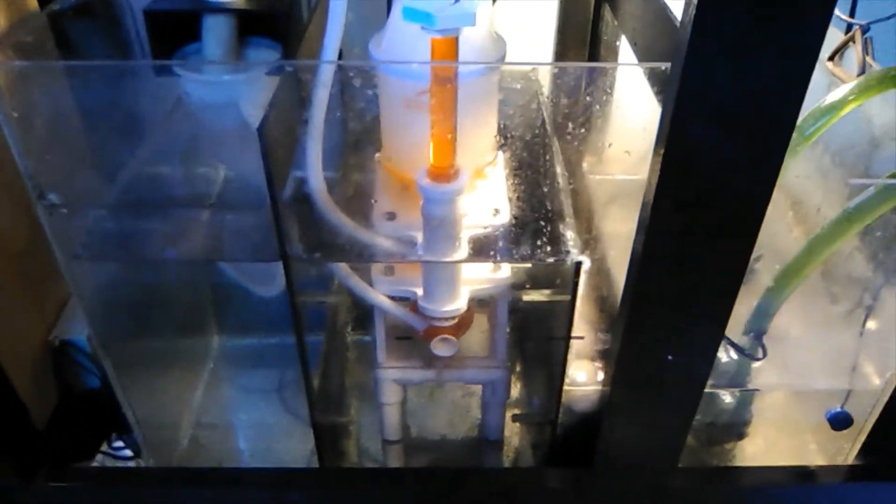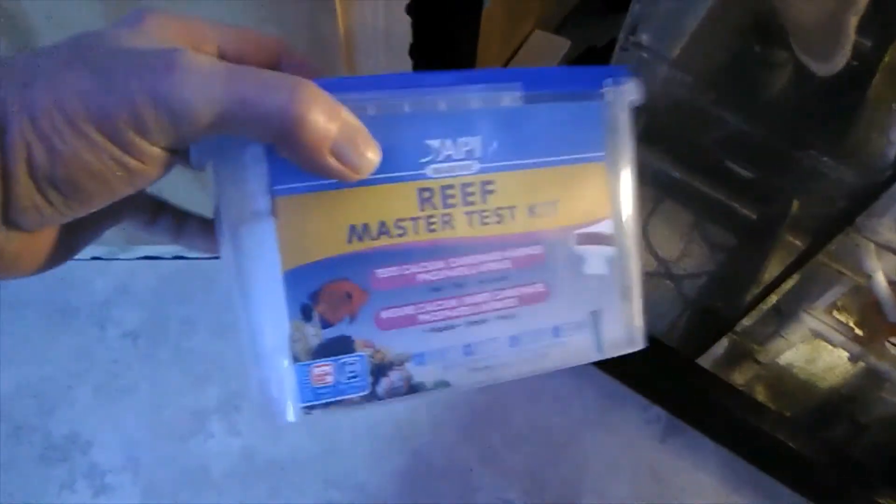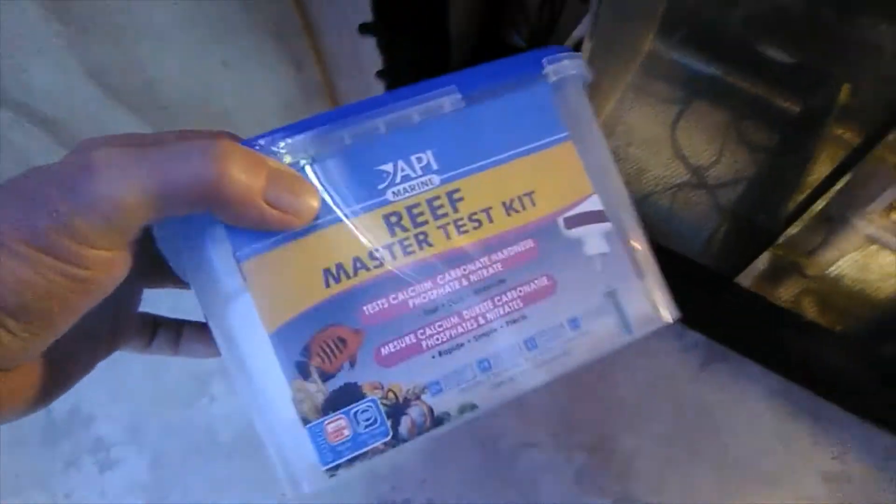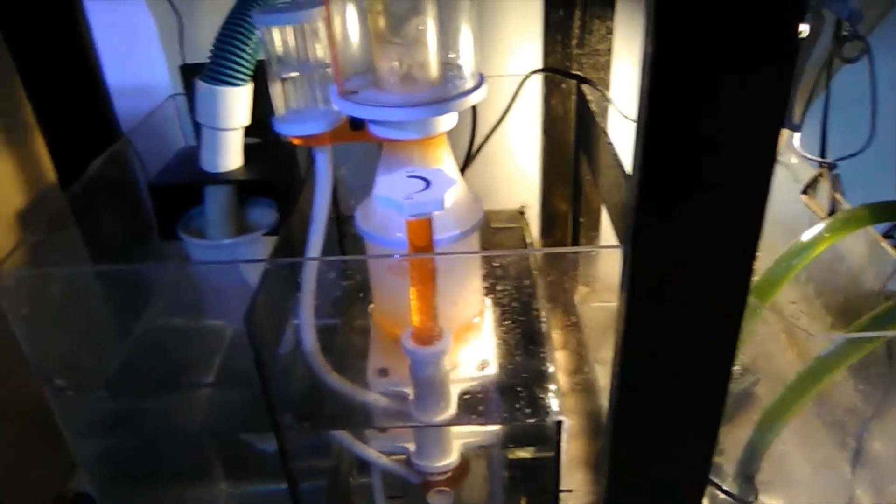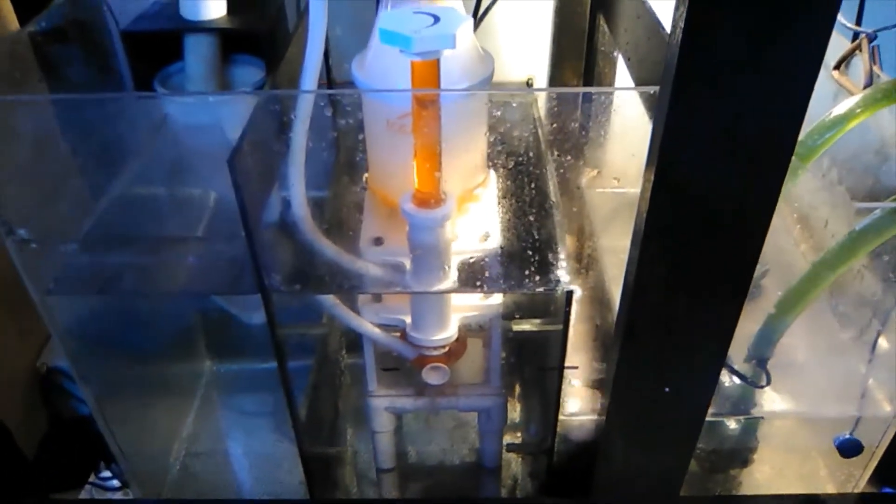And I tested it. I do remember testing it. I wrote it down. The nitrate and phosphate on this cheap test kit, which is what I use for my fish-only tanks, was undetectable. I had undetectable nitrates and phosphates on that cheap test kit. So, four weeks later, I just tested this tank.